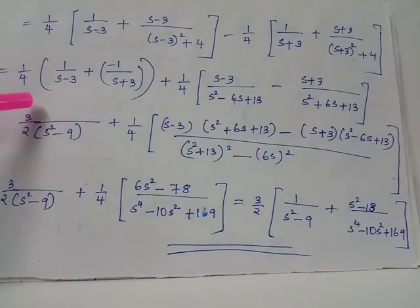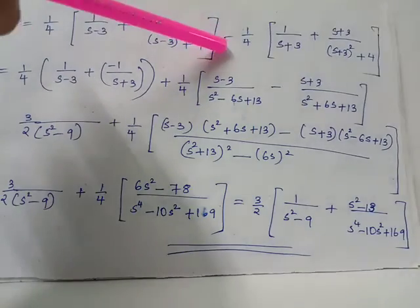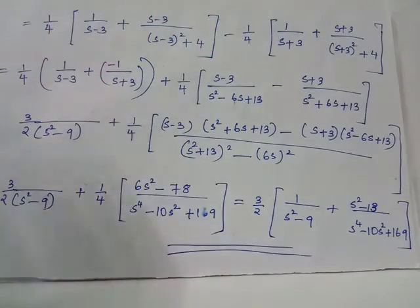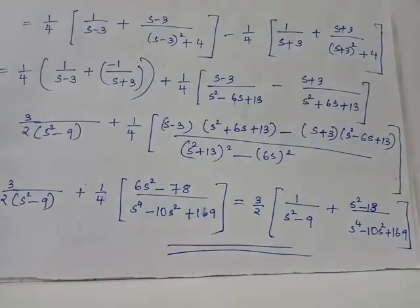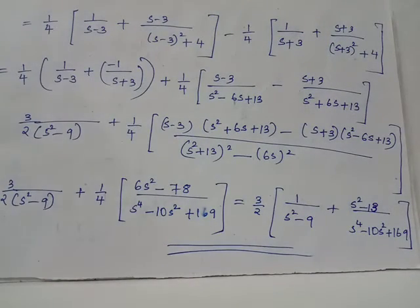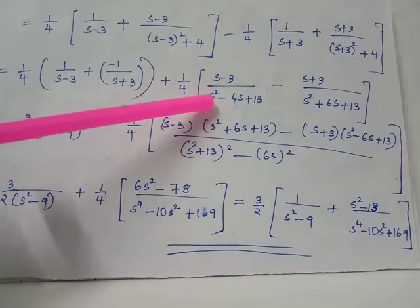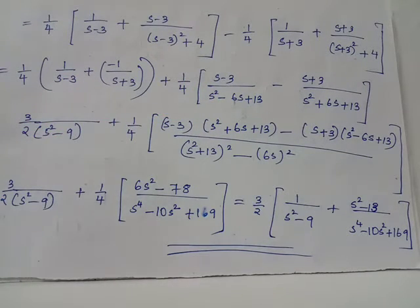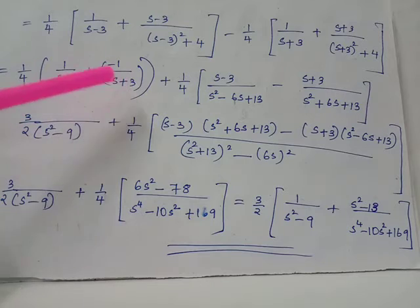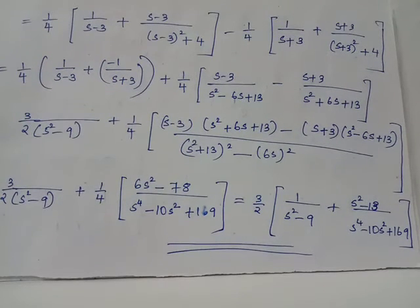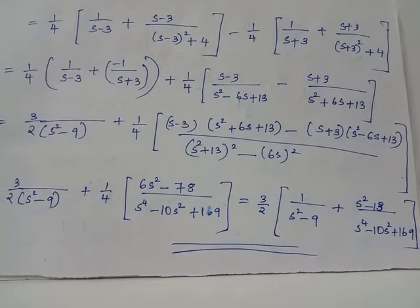Taking 1/4 as a common factor outside, we have 1/(s−3) minus 1/(s+3). We also group the remaining two terms, again taking 1/4 outside. After taking the LCM in the numerator for the first group, we obtain 6, and in the denominator we have 4.